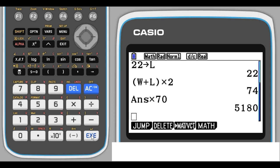Press EXE, and everything is recalculated. The perimeter is 74, and the cost is now 5,180.